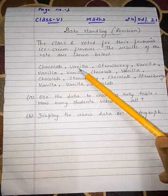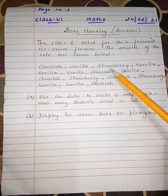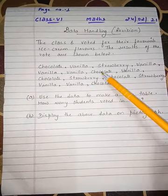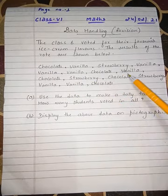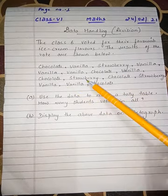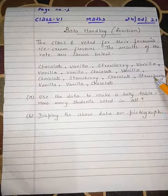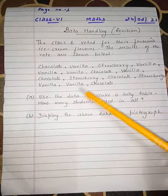The raw vote data is: chocolate, vanilla, strawberry, vanilla, vanilla, chocolate, vanilla, chocolate, strawberry, chocolate, strawberry, vanilla, vanilla, chocolate.